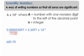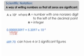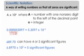689.70 could have either 4 or 5 significant digits, depending on whether or not the trailing zero is significant. However, if we write the number as 6.8970 times ten to the second, we have specified that there are 5 significant digits in the number. By using scientific notation, we have specified that all zeros in a number are significant digits.